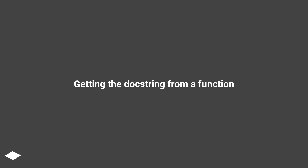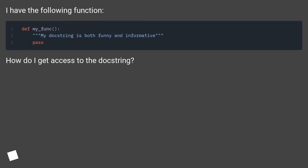Getting the docstring from a function. I have the following function. How do I get access to the docstring?